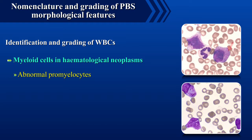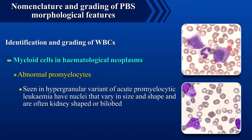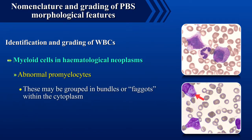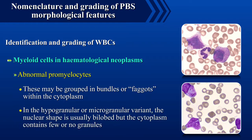Abnormal promyelocytes seen in the hypergranular variant of acute promyelocytic leukemia have nuclei that vary in size and shape and are often kidney-shaped or bi-lobed. The cytoplasm is packed with large coalescent pink to purple granules and may contain Auer rods, which may be grouped in bundles or faggots within the cytoplasm.